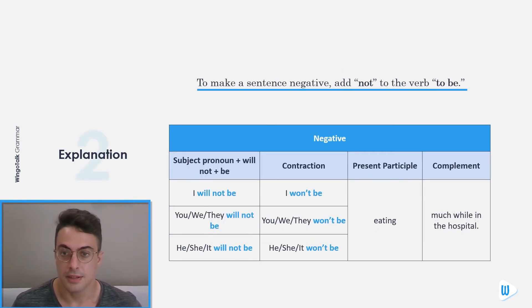To make a sentence negative, add not to the verb to be. Negative: Subject, subject pronoun plus will not, plus be. I will not be, I won't be, eating much while in the hospital.